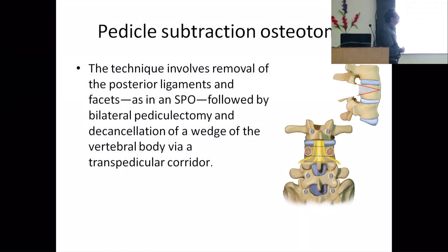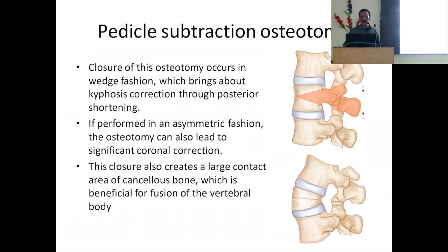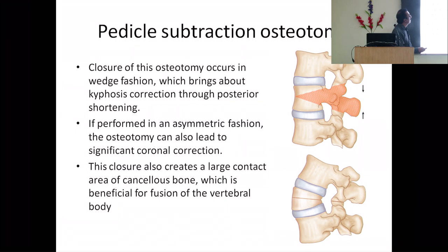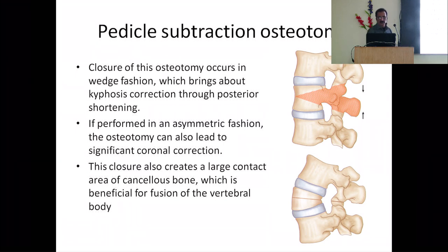Both pedicles are exposed and removed. Through the pedicle — there is a cortical rim around the pedicle and inside is cancellous bone. You start taking out the cancellous bone, removing this much of a wedge of bone. Once that is done, you close the gap — there will be a fracture of the anterior cortex, but it will come together and you will get lordosis instead of kyphosis. Correction is achieved.